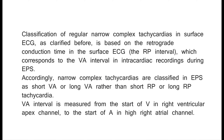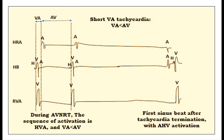Accordingly, narrow complex tachycardias are classified in EPS as short VA or long VA tachycardia rather than short RP or long RP. The VA interval is measured from the start of V in the right ventricular apex channel to the start of A in the high right atrial channel. In a schematic of intracardiac ECG during AVNRT, the His bundle is activated first (H wave), followed by the ventricles (V wave), followed by the atria (A wave). The sequence in the His bundle channel is therefore HVA, and VA is shorter than AV. After return of sinus rhythm, the activation sequence becomes normal: AHV.